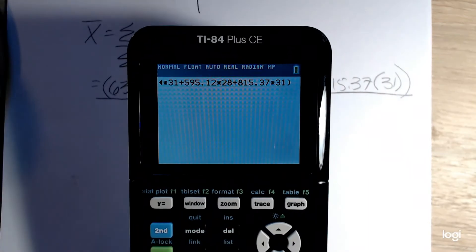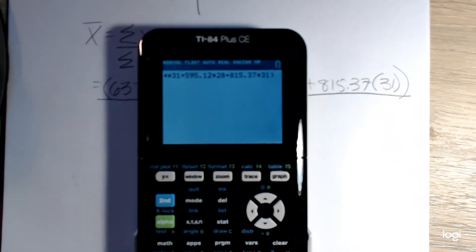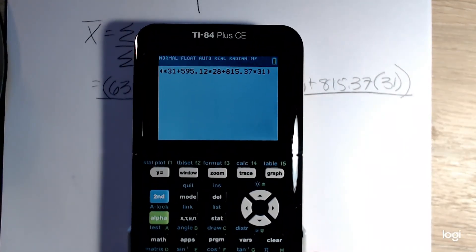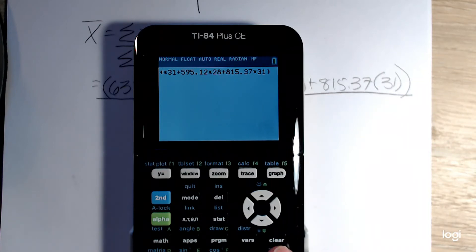And then I want to divide that. I apologize, my screen keeps going out of focus. I want to divide that by the sum of the weights. Again, you want to open up a set of parentheses here.